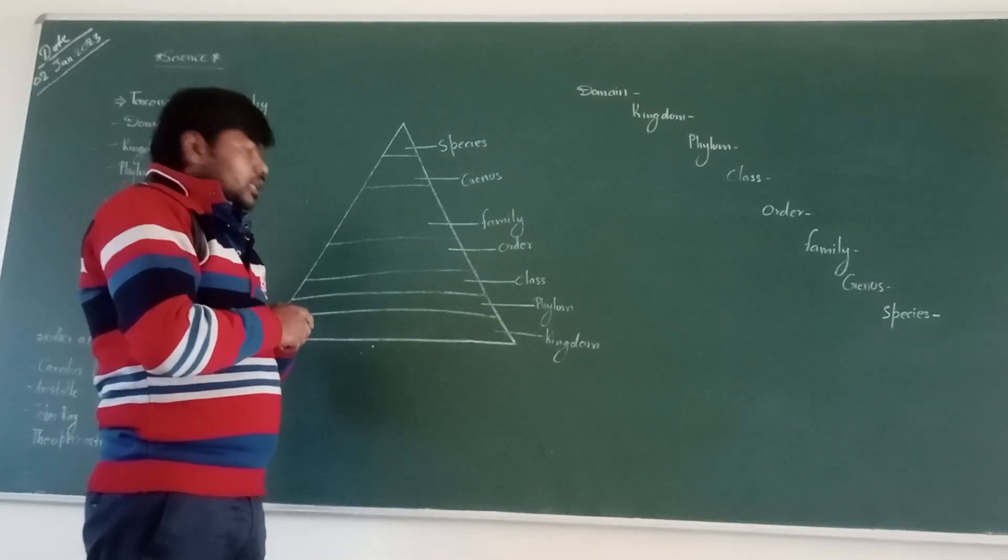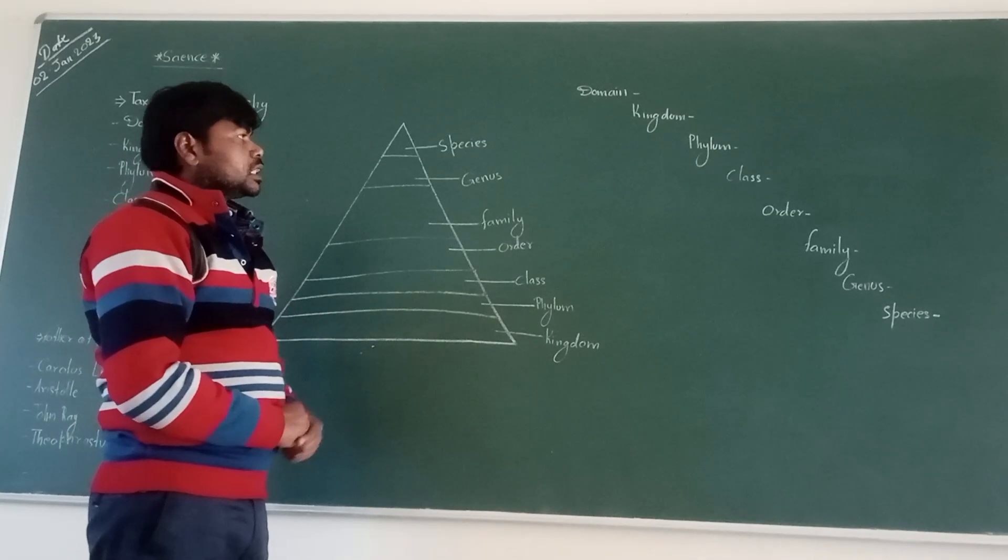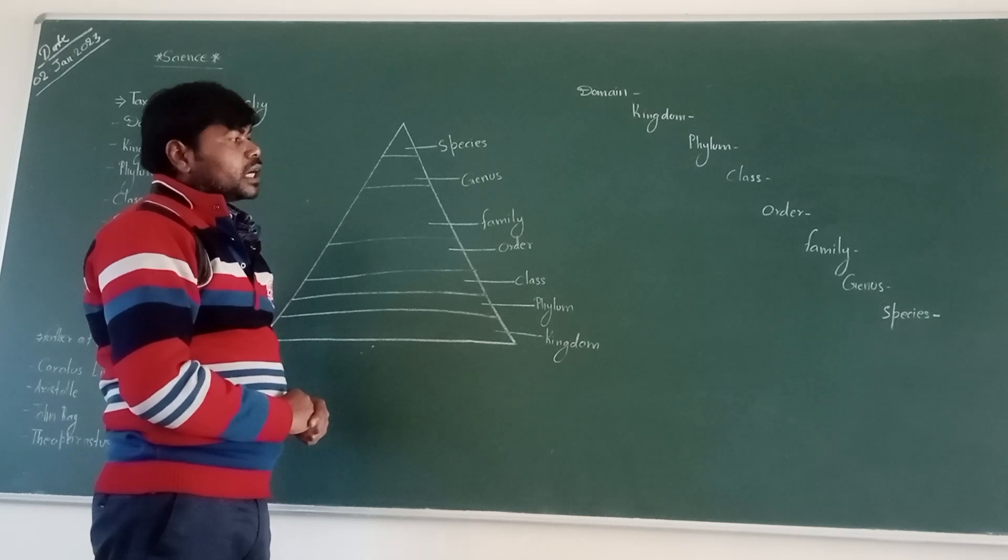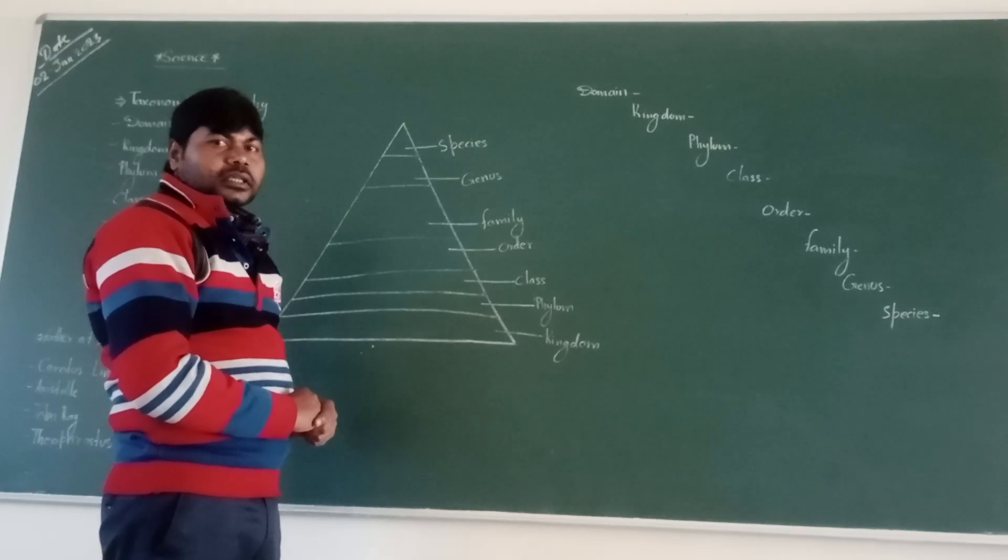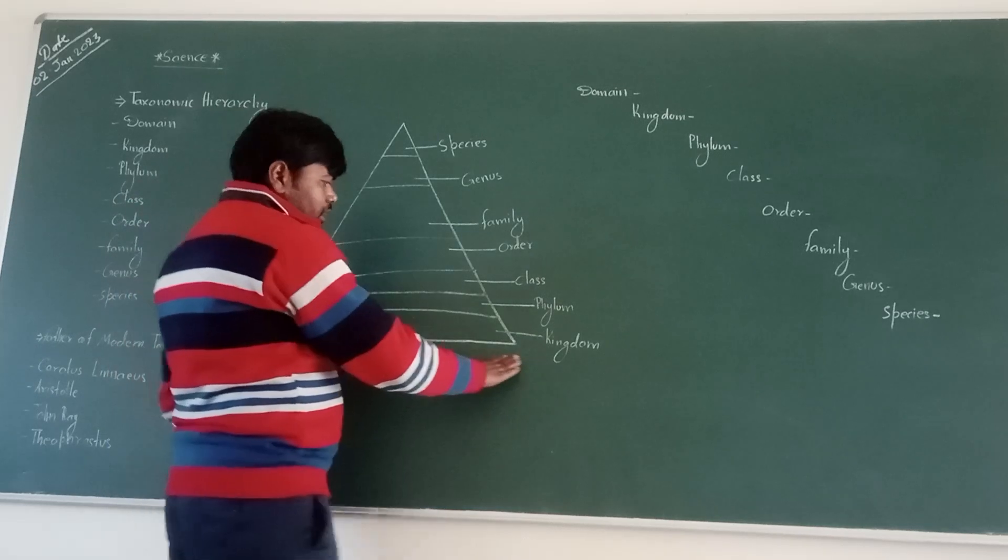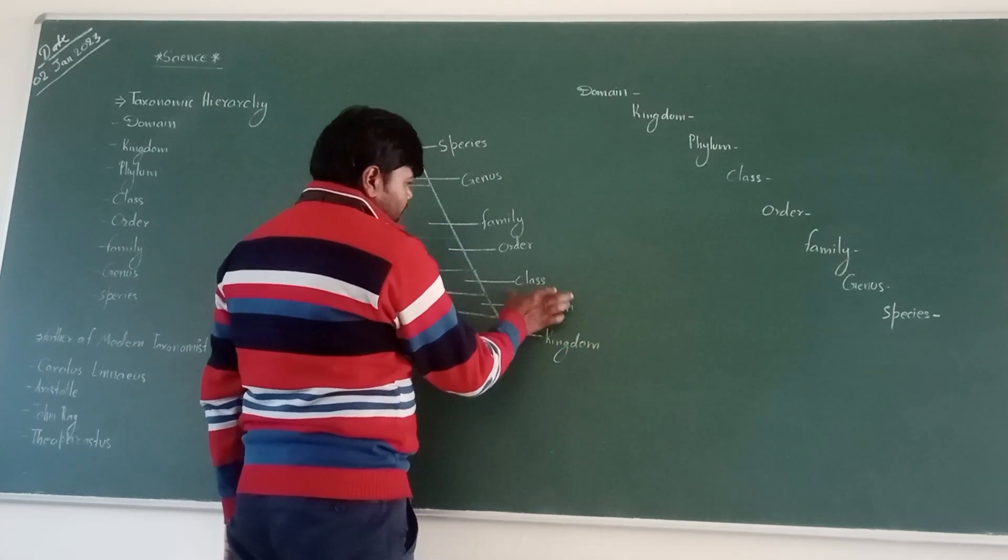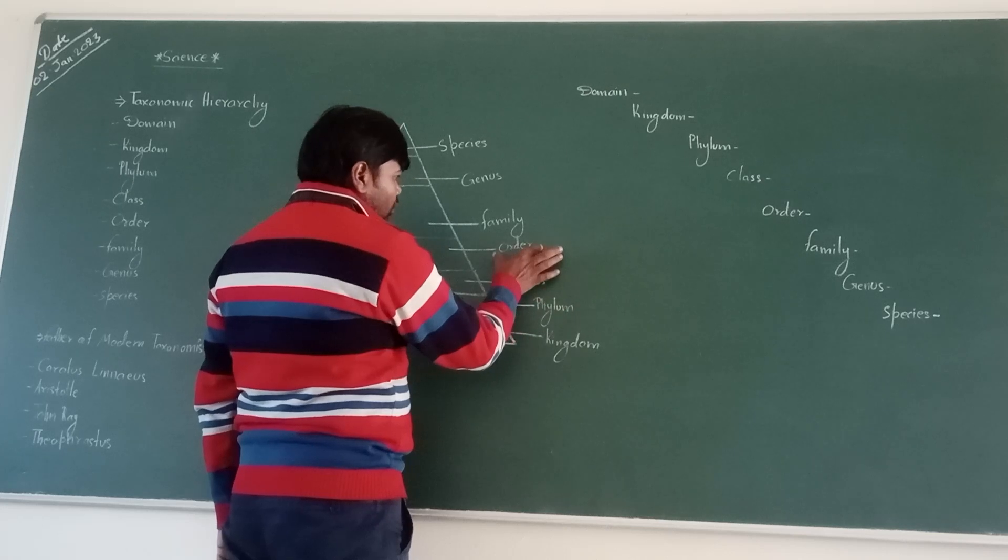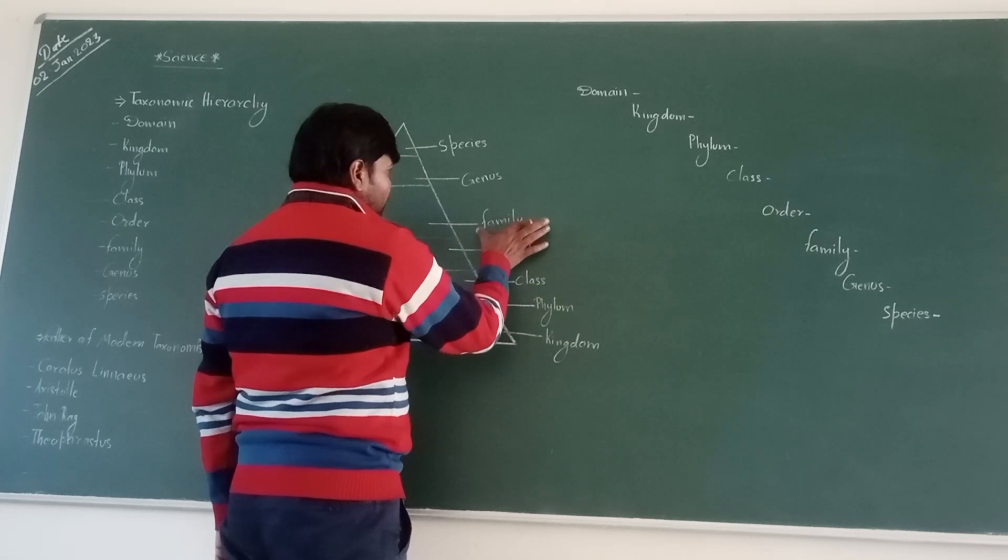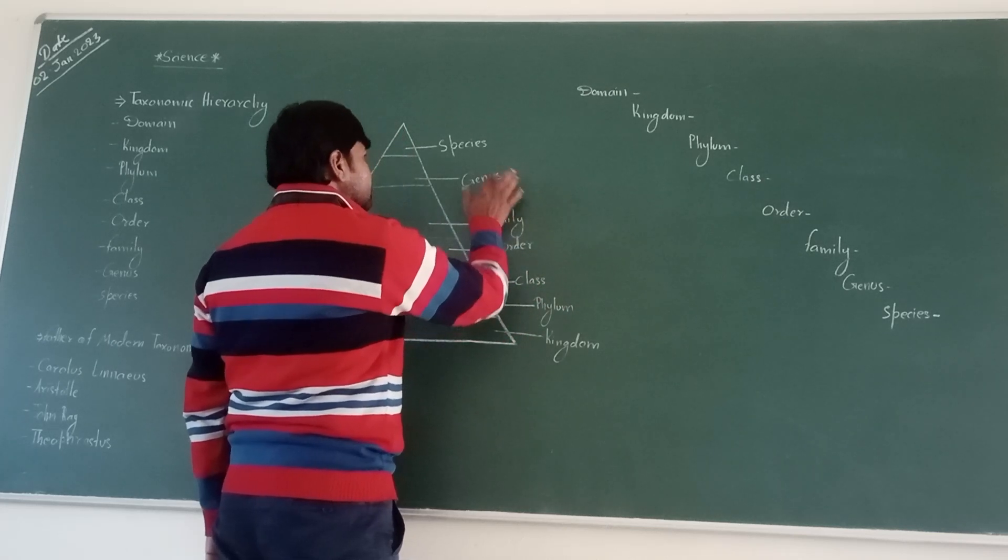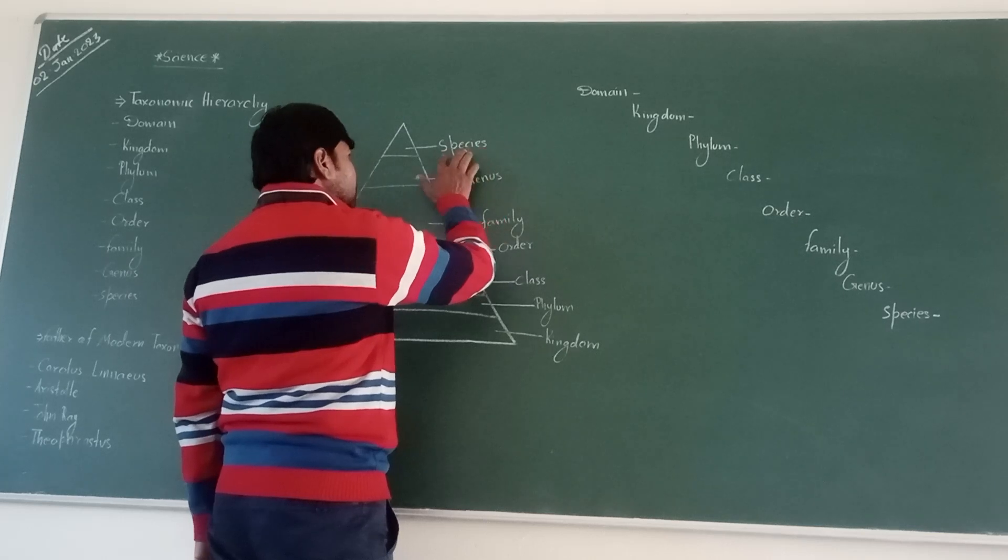Taxonomy is the branch of science which is the study of classification. Plants and animals are classified according to kingdom, then phylum, next class, next order, next family, next genus, and next species.